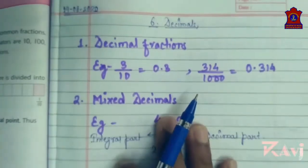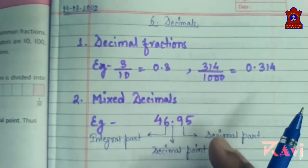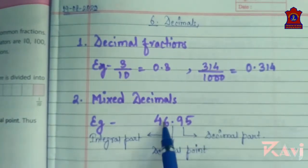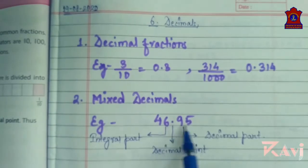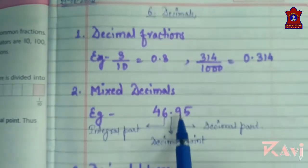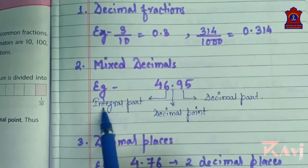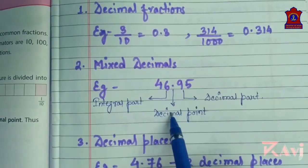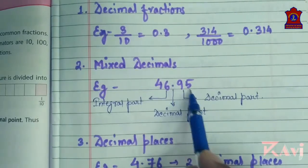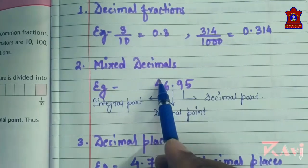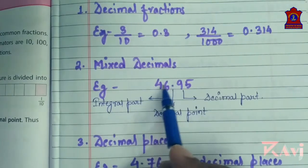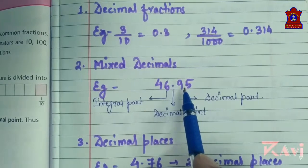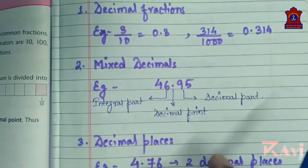Next is mixed decimals. A mixed decimal contains a whole number and a decimal part. Here 46 is the integral part, this is the decimal point, and 95 is the decimal part. So we are reading this as 46.95.